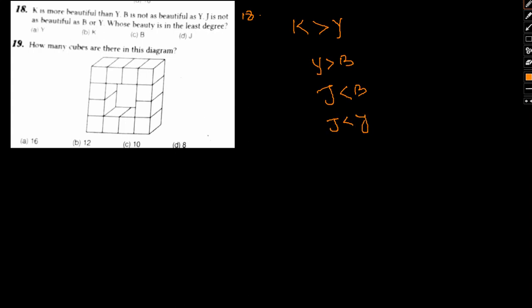So basically, if we are trying to make sense of all of this, we have K, Y, B, J. Now, we are supposed to, who is the beauty in the least degree? Then that will be J. Option D will be the answer.